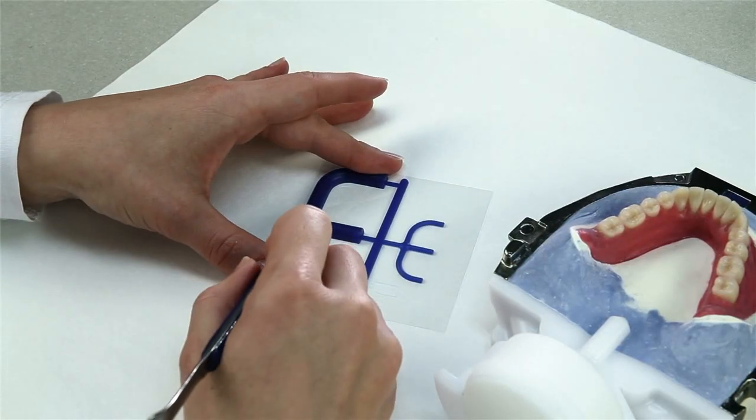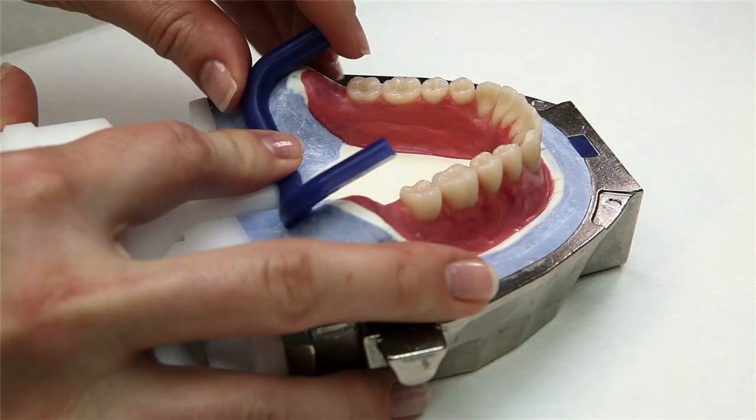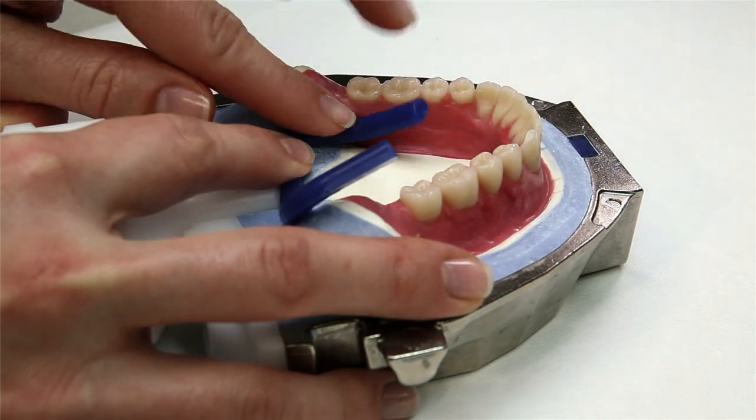For mandibular complete dentures, cut off the center sprue and place the outer sprues in the lingual area of the retromolar triangle.